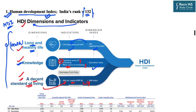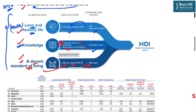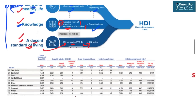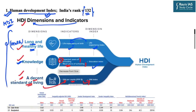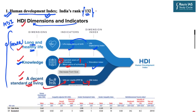This chart shows India's ranking — India has been given serial order 132, which is the rank of India in the HDI.